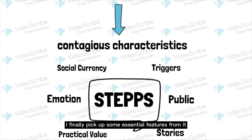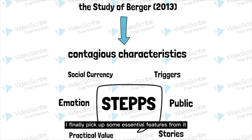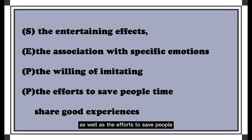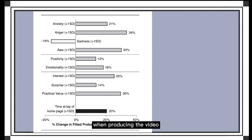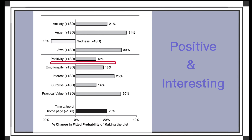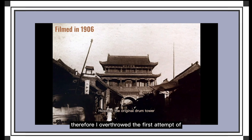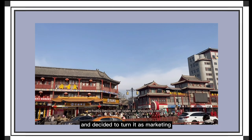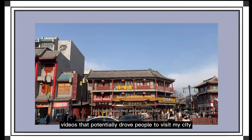For producing my video, I picked up some essential features: the entertaining effects, the association with specific elements, the willingness of imitating, as well as its efforts to save people time and share good experiences. When producing the video, I found out that based on the graph produced by Berger, it will much more heighten the possibilities of going viral if a video presents positive emotions and interesting features. Therefore, I overthrew the first attempt of making it a boring academic cliché and decided to turn it into a marketing video that potentially drove people to visit my city.